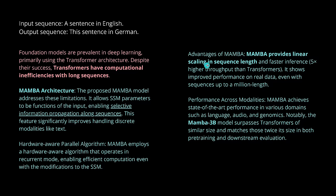The advantages: S6 provides linear scaling in sequence length and faster inference. They created a 3-billion free-trainable-parameter model and claim it surpasses transformers of similar size and matches transformers twice its size, both in pre-trained and downstream evaluation. It's a really interesting finding that from the architecture alone, Mamba can surpass the performance of transformers.